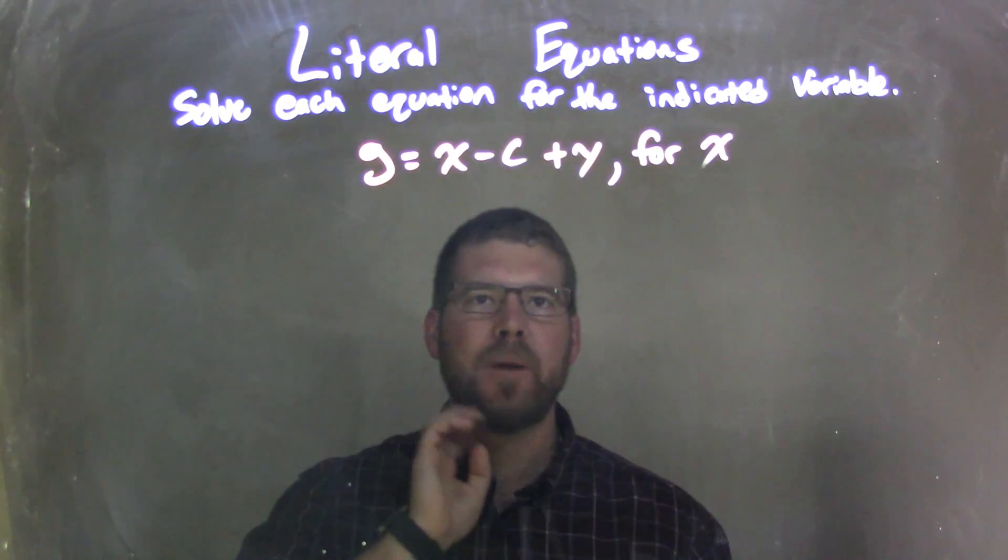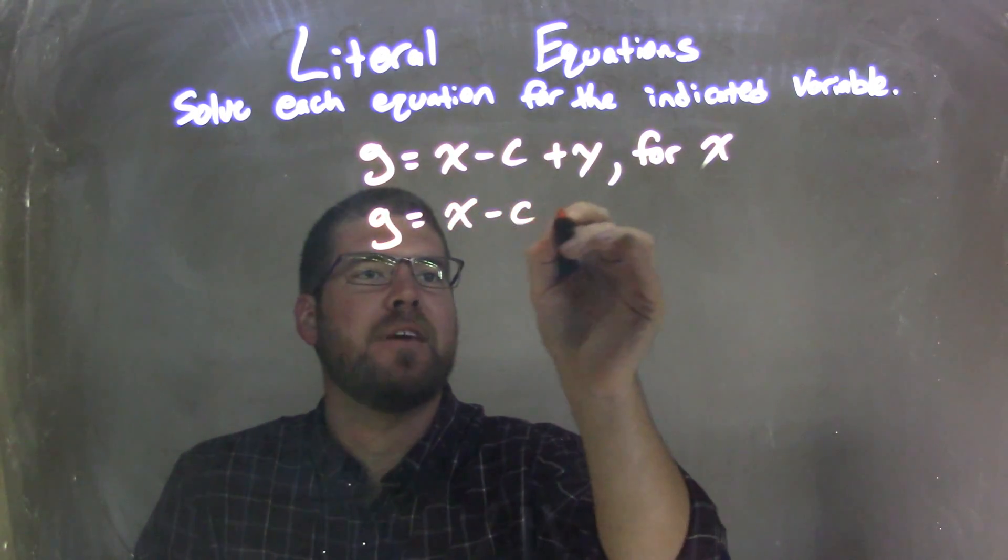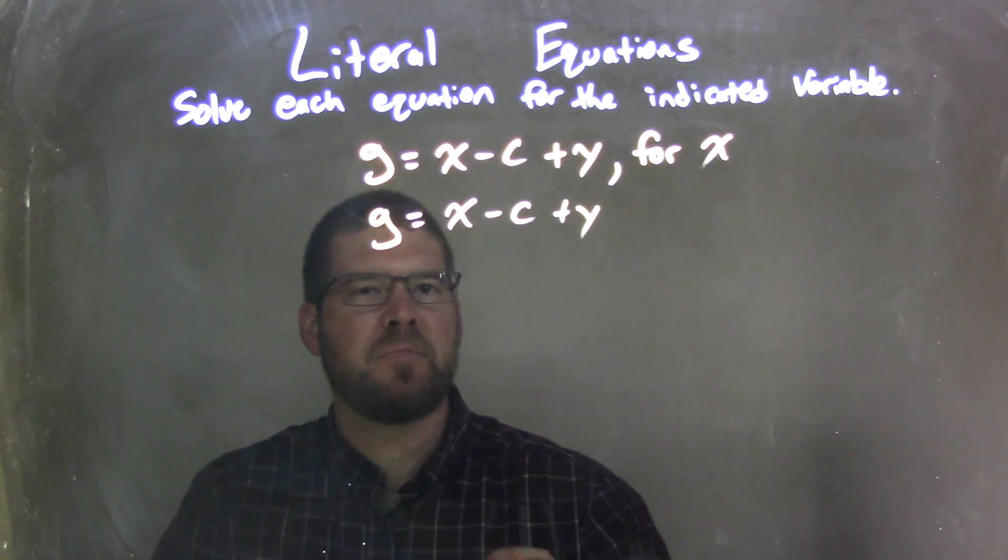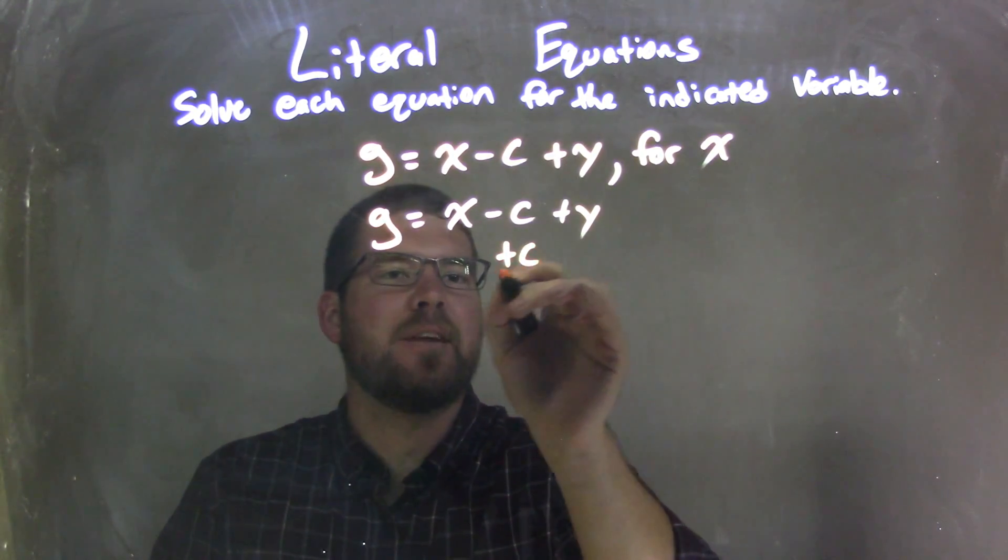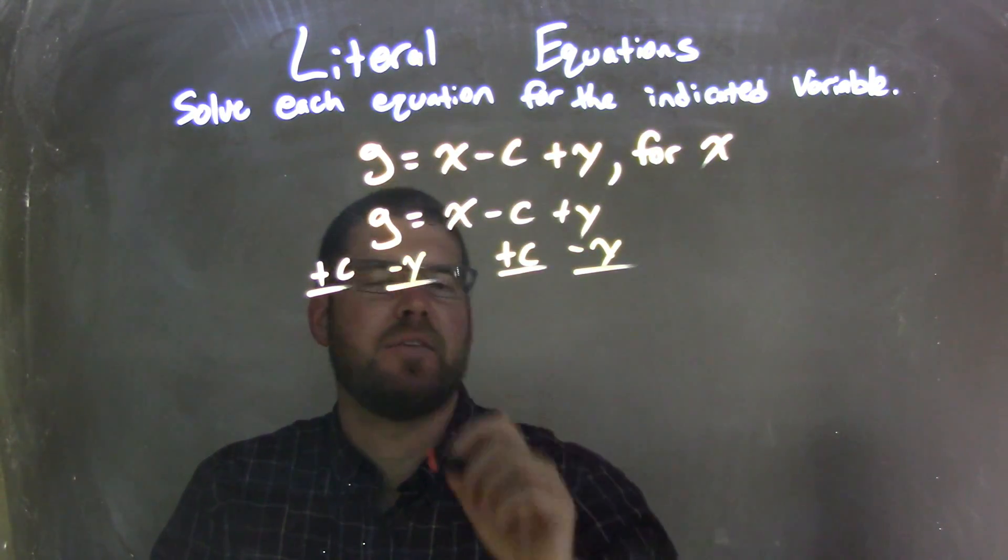Well, we need to solve for x. So what I'm going to do here is I'm going to rewrite my equation, g equals x minus c plus y, and we can probably do all this in one step. So let's go for it. I'm going to add c to both sides, and I'm going to subtract y to both sides individually.